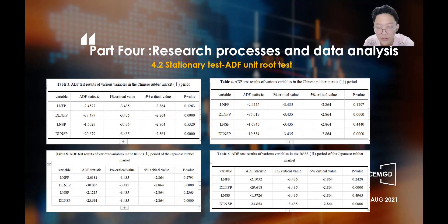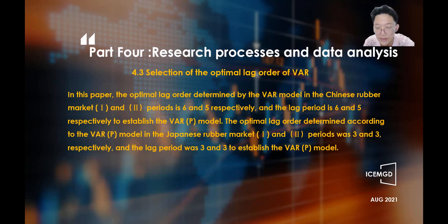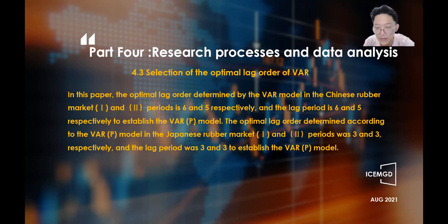In this paper, a test model with intercept and no time trend is selected for the stationarity test. Tables 3 and 4 show the ADF test results for the first and second periods of the domestic rubber market. It can be seen that the futures price and spot price series in both China and Japan are of the same order of integration. The VAR model was established prior to the Johansen cointegration test. The pre-order lag period of the endogenous variables in the model was specified so as to reflect the dynamic relationship between all endogenous variables. According to the VAR model, the optimal lag order for the first and second periods of the China Rubber Market is 6 and 5 respectively, and the VAR models are established with lag periods of 6 and 5 accordingly.